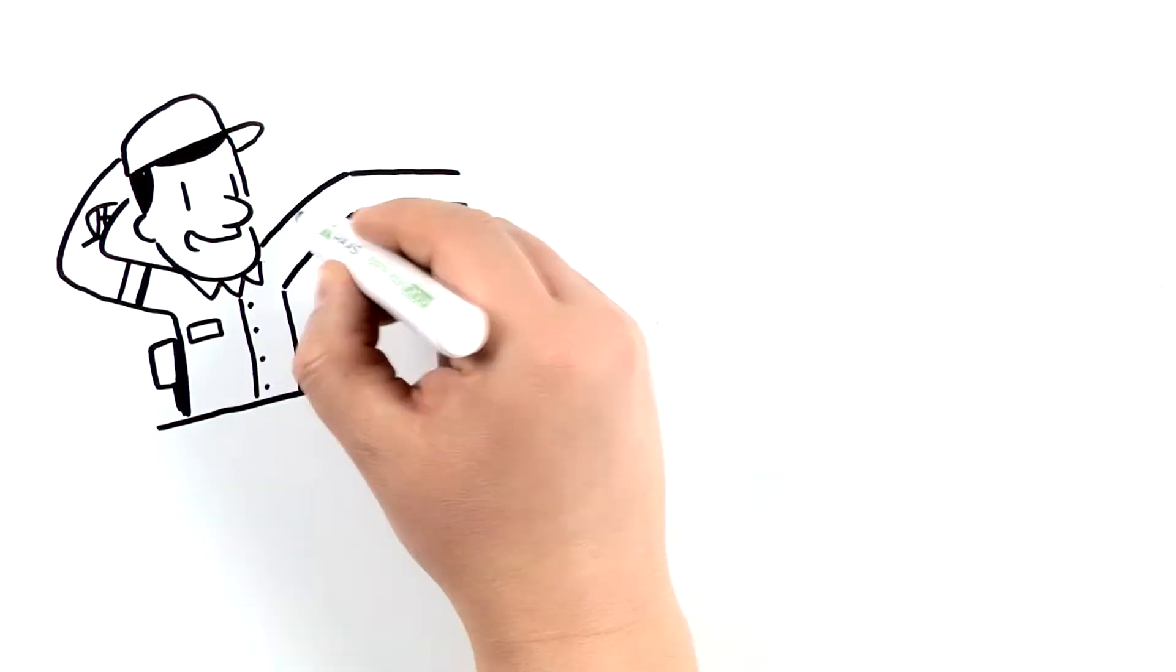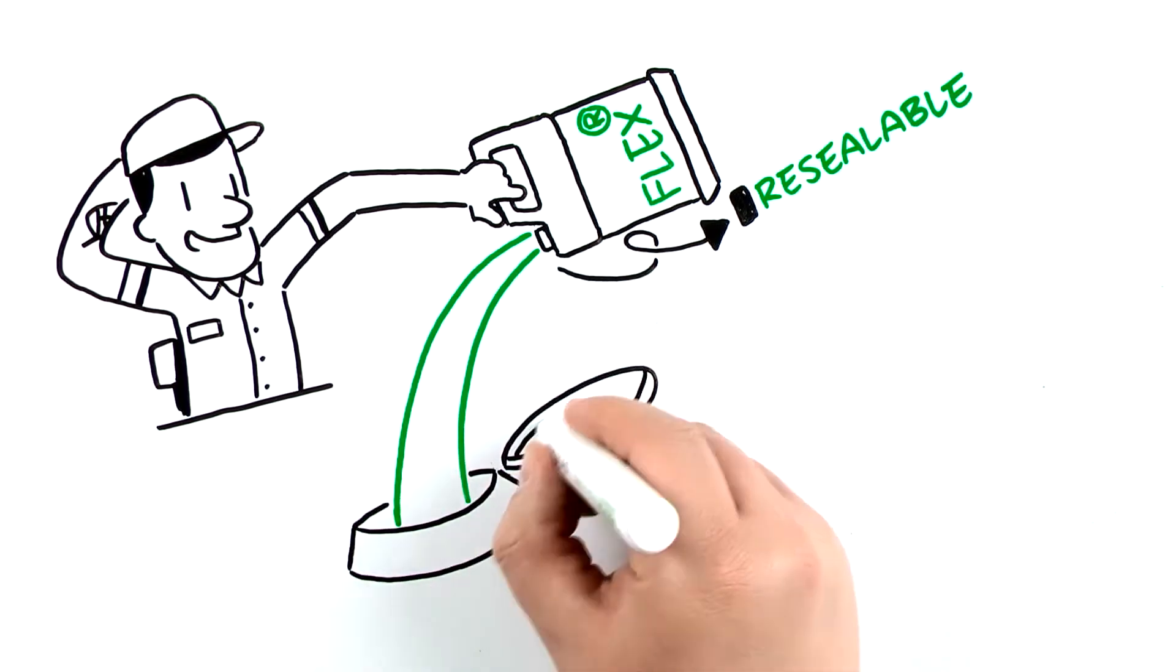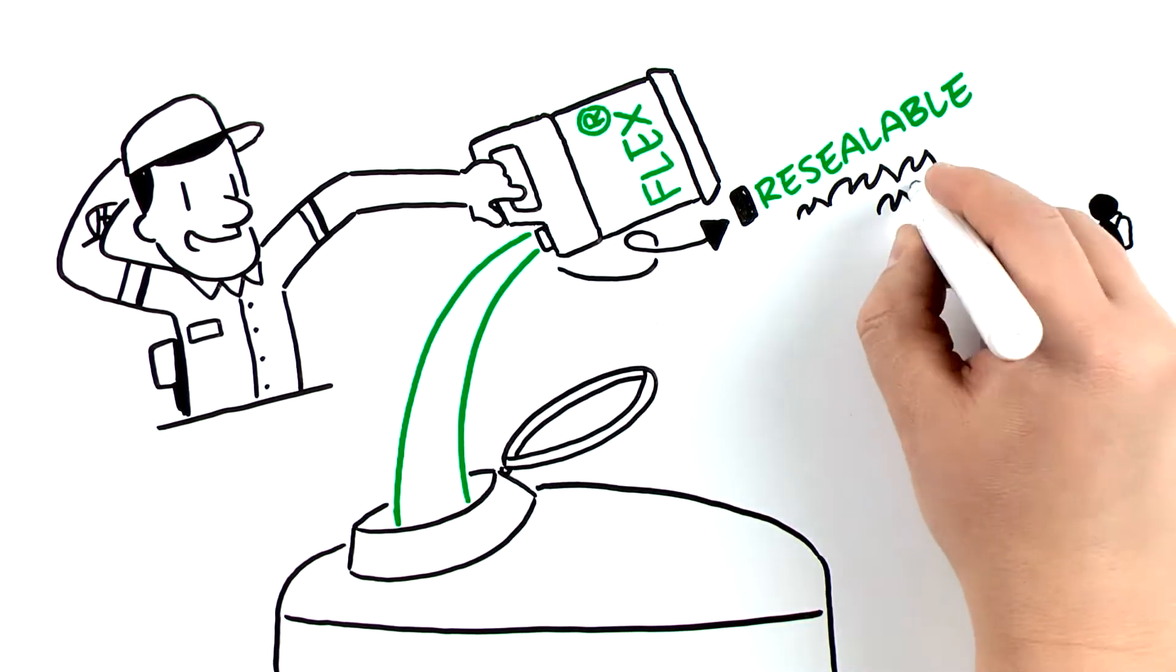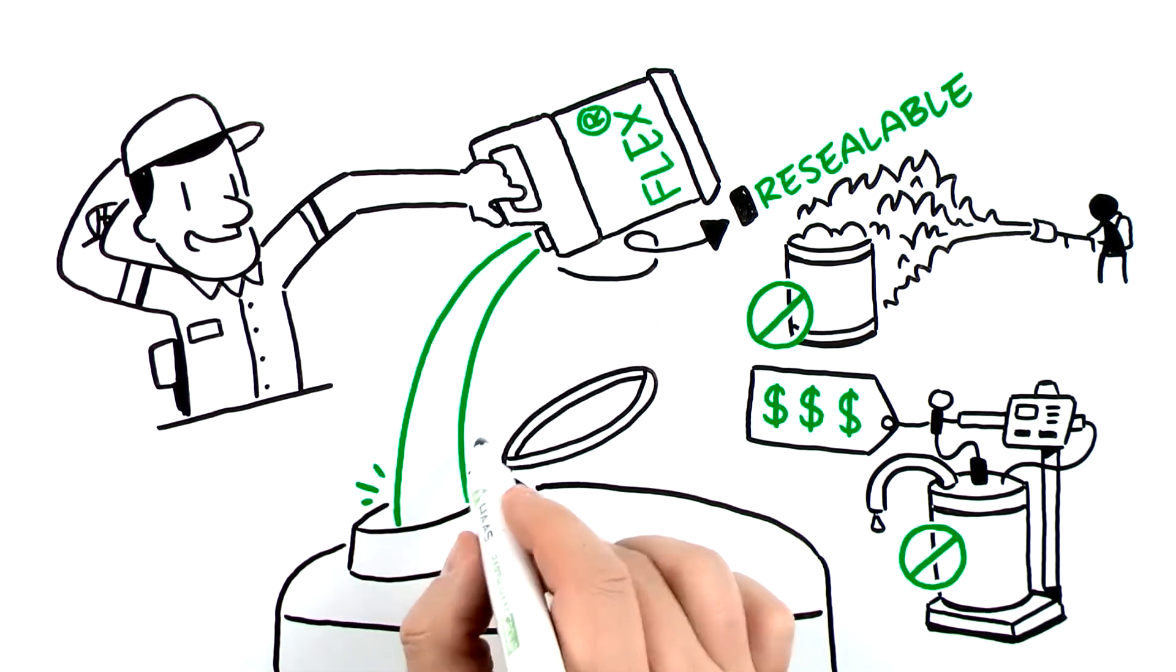You can't beat the convenience of FLEX. Just twist open the resealable cap and FLEX pours right out of the bottle. No need to preheat or use expensive dosing equipment. Just pour and go.